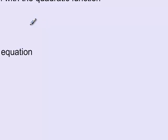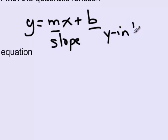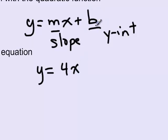We can write a linear equation in slope-intercept form: y equals mx plus b, where m is the slope and b is the y-intercept. We're told the slope is 4, so our equation is y equals 4x plus something. I don't know the y-intercept, so I'll keep it as a variable. I'll change the letter from b to k to avoid confusion with the b used in the quadratic formula — they both just represent numbers.